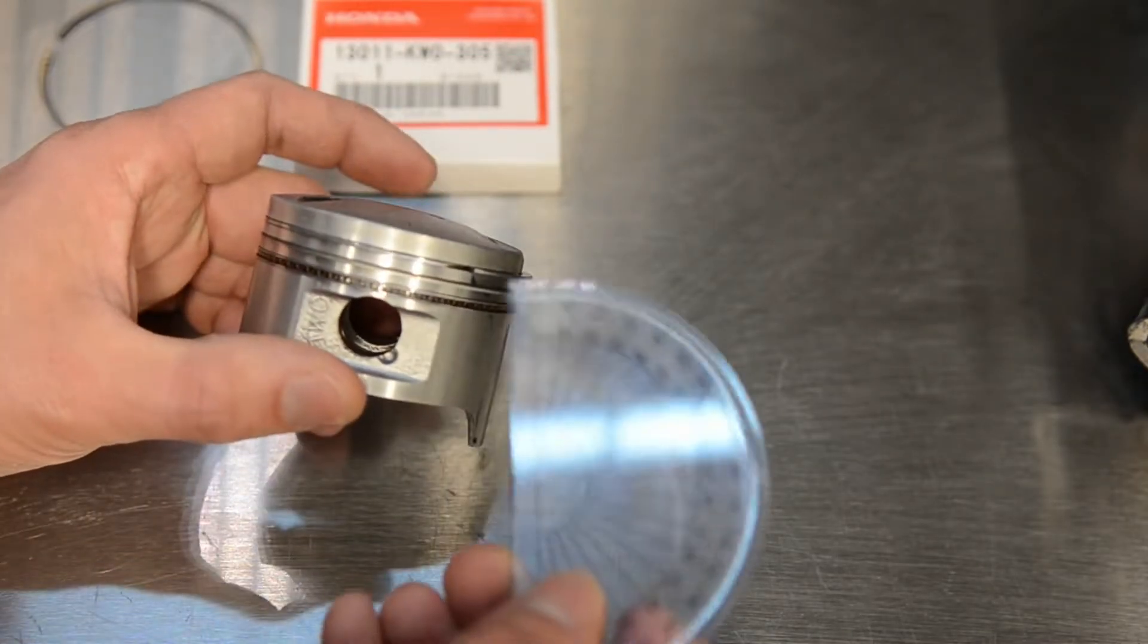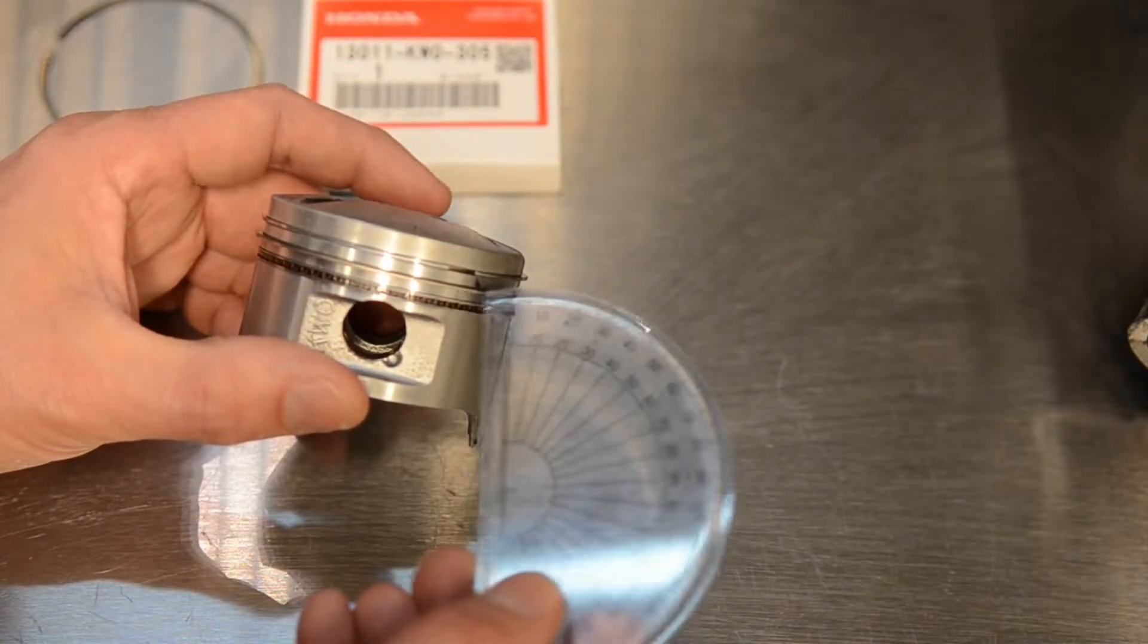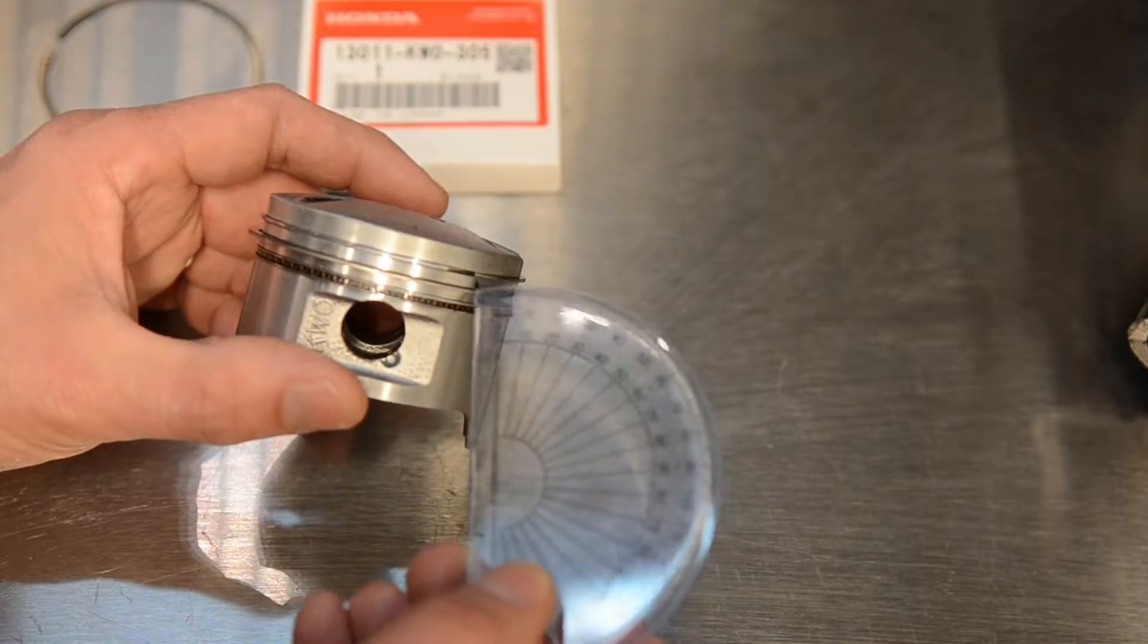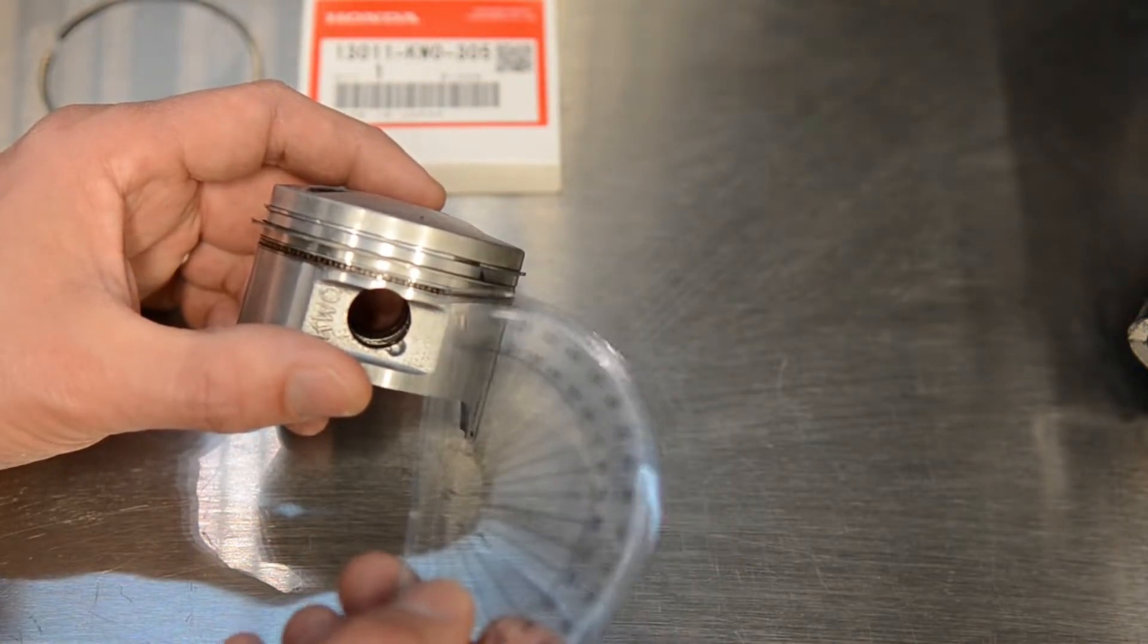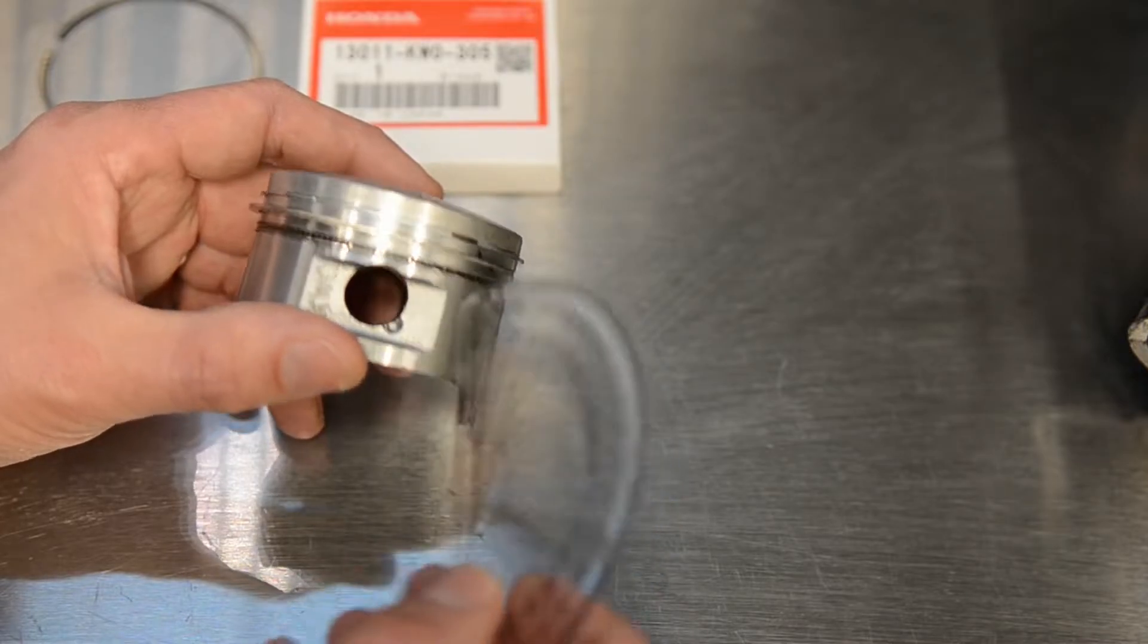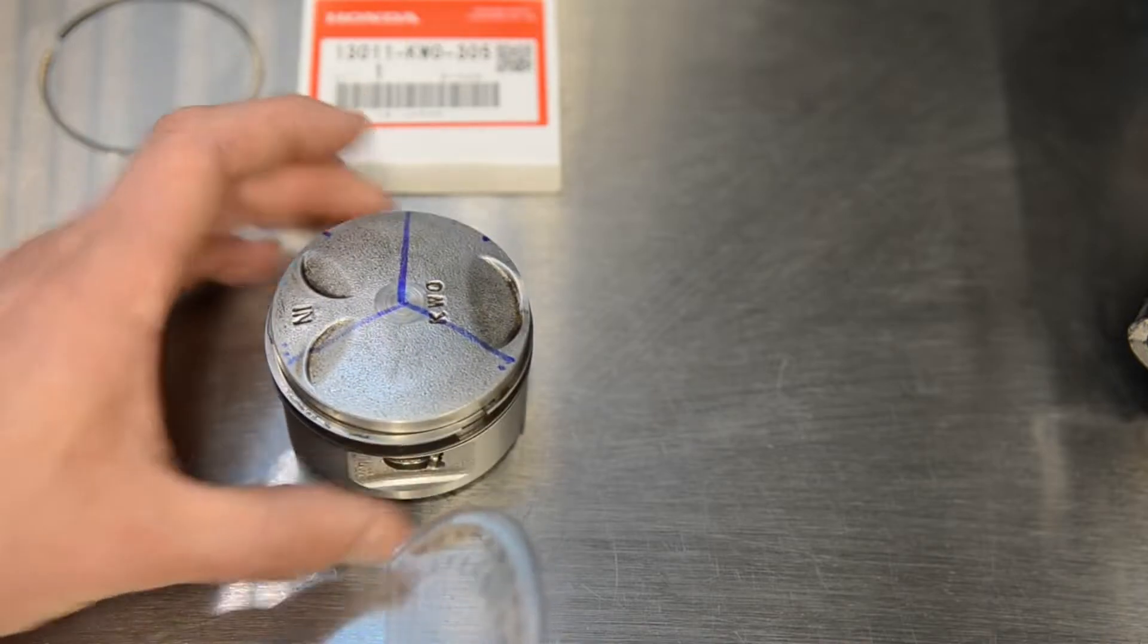You've got three rings: the compression ring which is your top ring, the second compression ring which is a compression ring slash oil scraper ring, and then your actual oil ring which scrapes the oil and lets it go down through those little holes in the bottom.